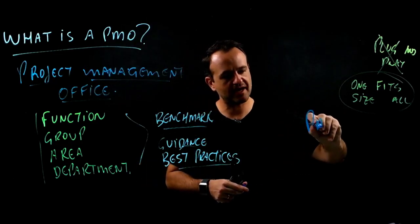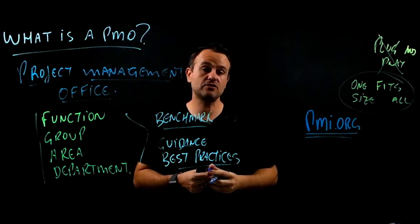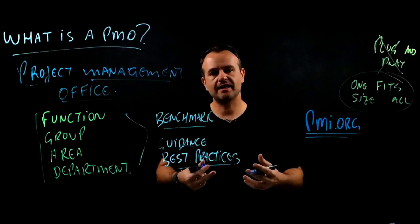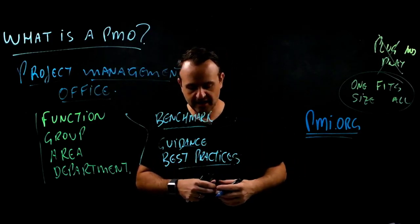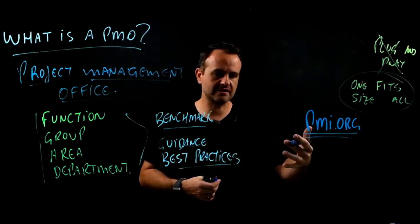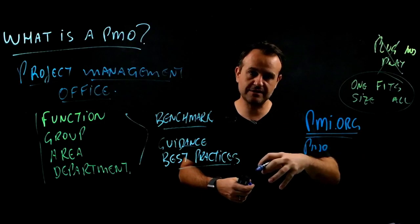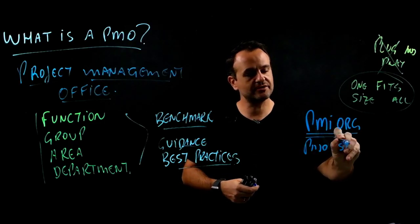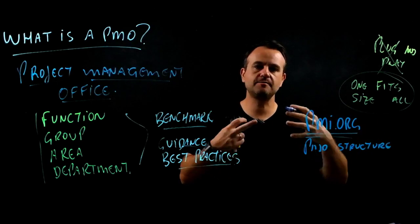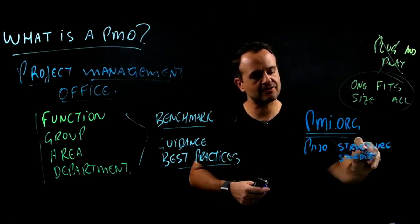According to PMI — PMI.org, one of the leading organizations in project management — a Project Management Office is a management structure that standardizes, facilitates, and centralizes project-related activities and processes. A PMO is a structure — it could be virtual or physical — responsible for standardizing, facilitating, and guiding project-related activities organization-wide.